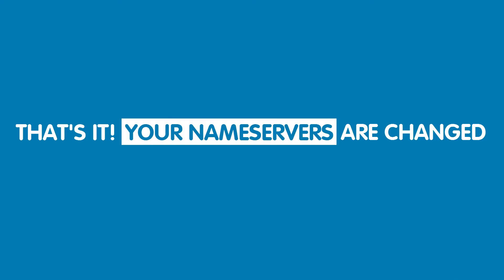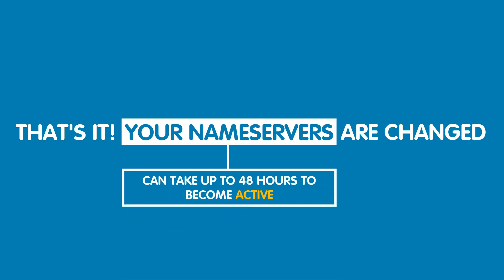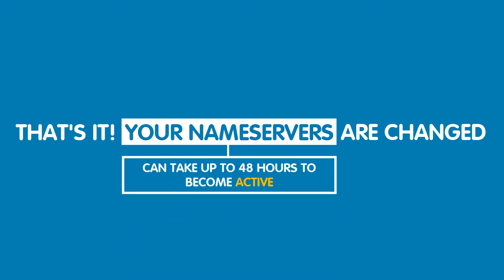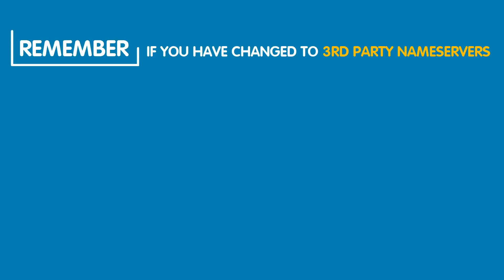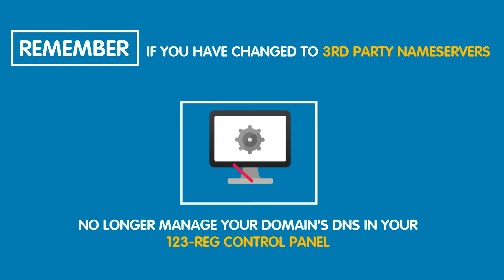That's it, your name servers are now changed. Please note that it can take up to 48 hours for your name server changes to propagate over the internet. If you have changed your name servers to a third party provider, this will mean you can no longer manage your domain's DNS in your 123reg control panel.